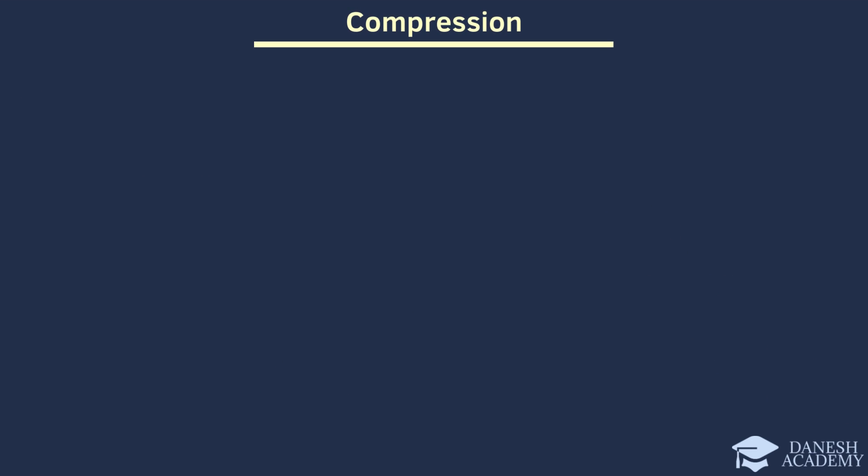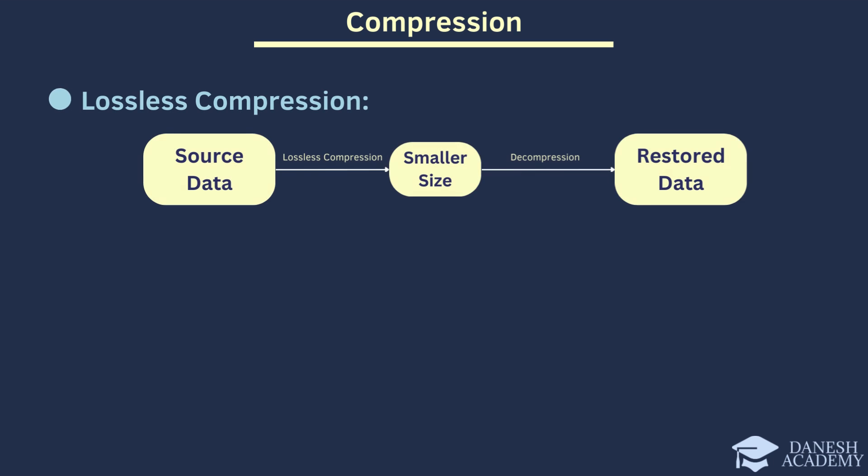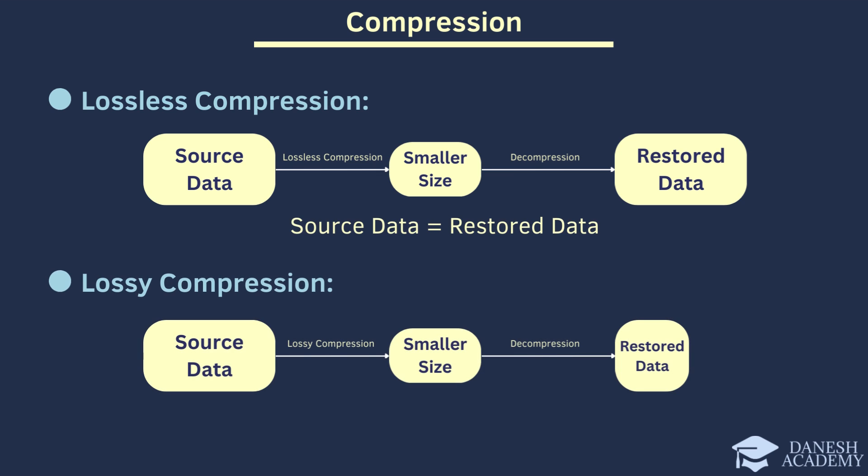When we talk about compression, there are essentially two main types: lossless and lossy compression. With lossless compression, the restored data is exactly the same as the original. It compresses without losing any information. On the other hand, lossy compression sacrifices some data during compression, so the restored data isn't exactly like the original.